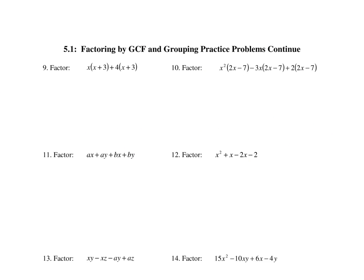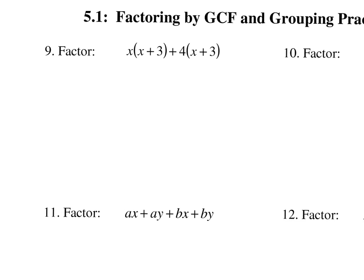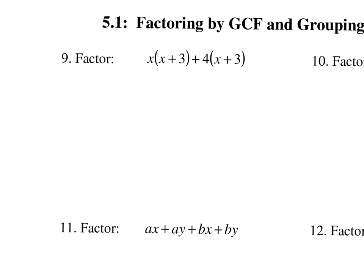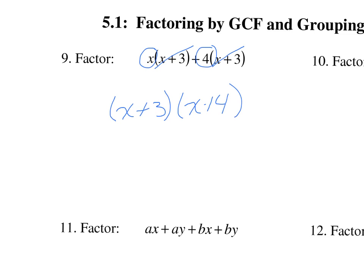We've got some more practice problems. Number 9: remember, this is two terms. What you're looking for is a common binomial. This X plus 3 appears in both terms. So when you factor out X plus 3, you bring it to the front and take it out of both terms, and you're left with what was multiplied on the outside: X plus 4.